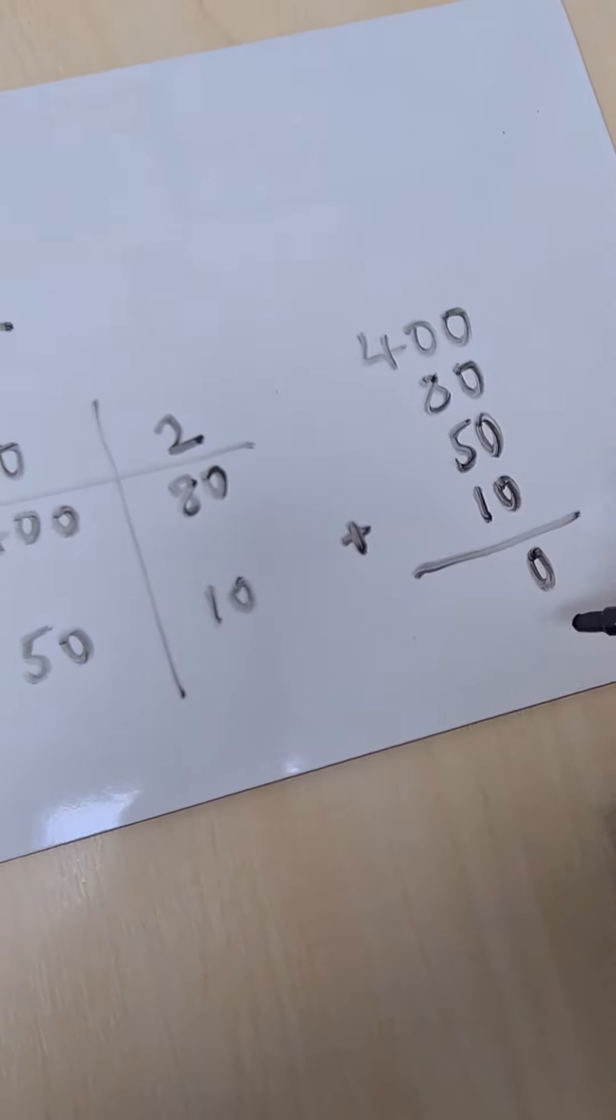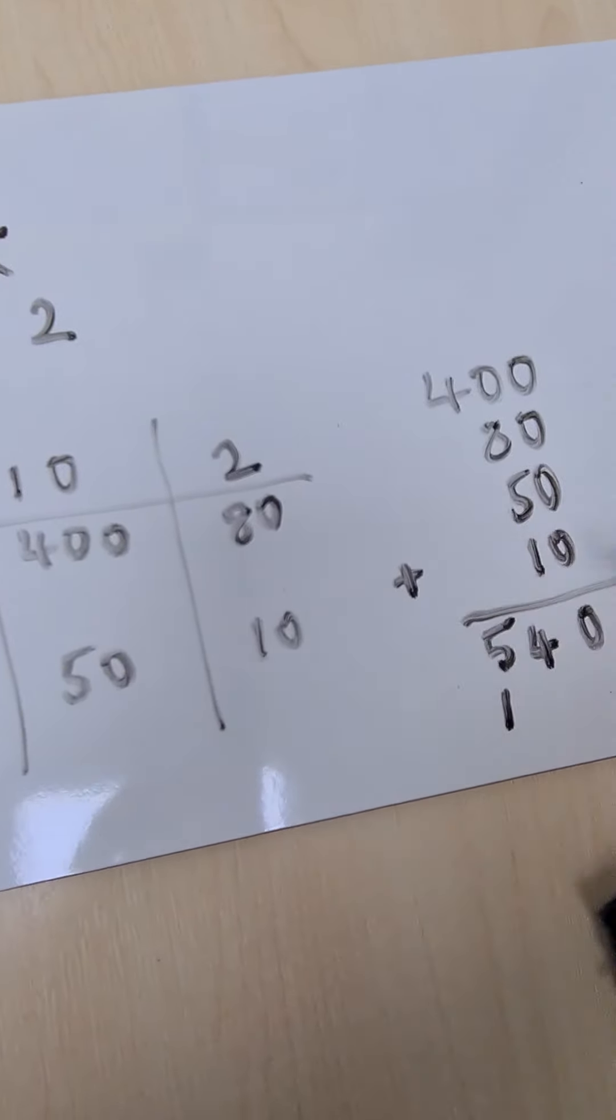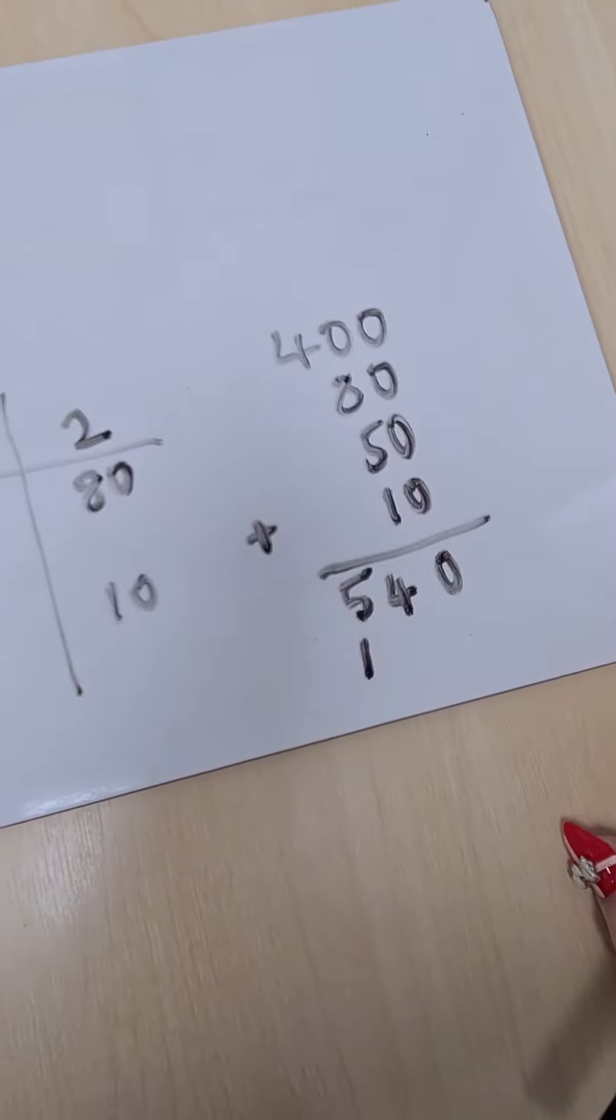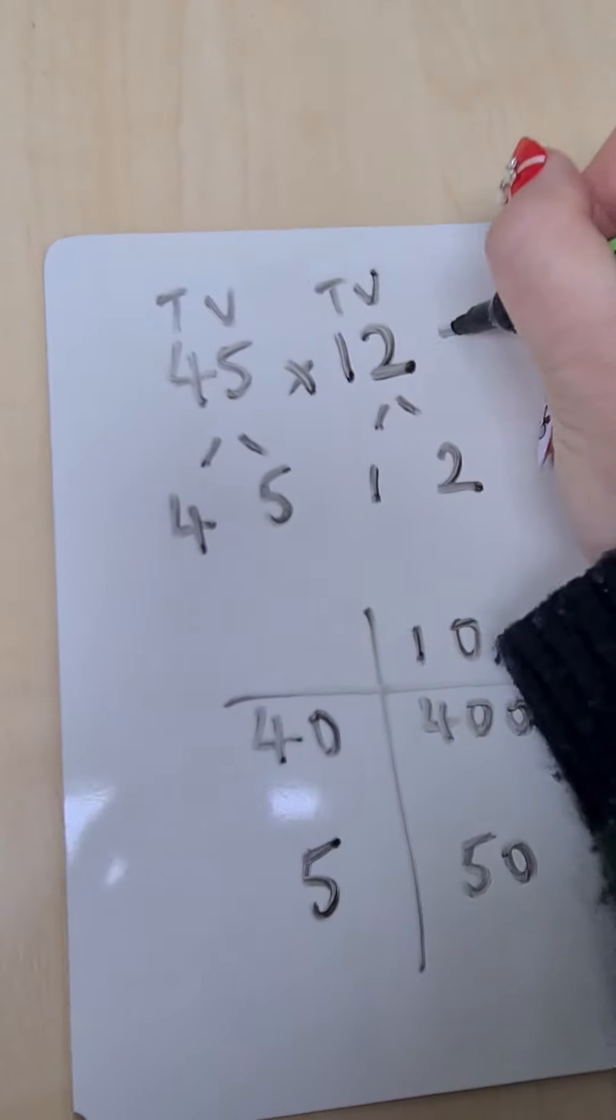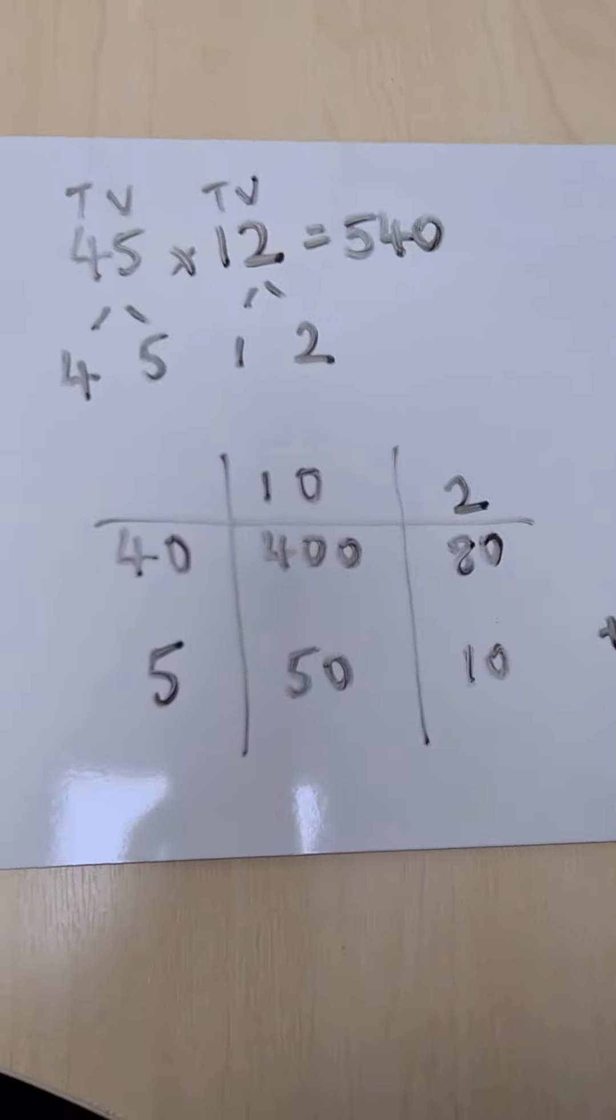We can very quickly see that we have 540 as our total. We can then go back to our multiplication and complete it.